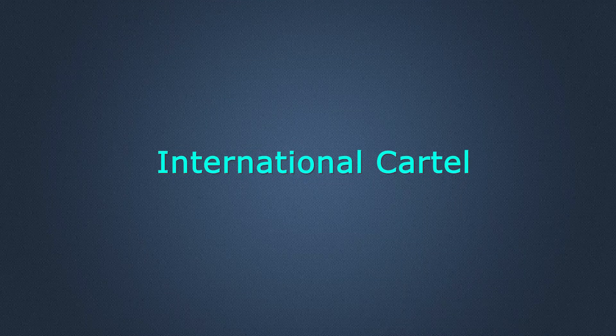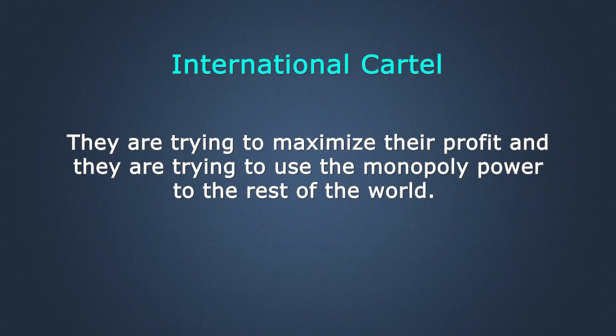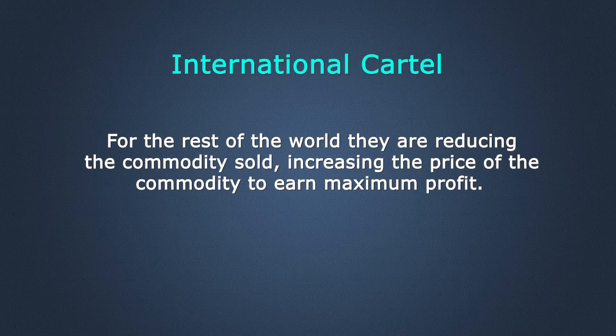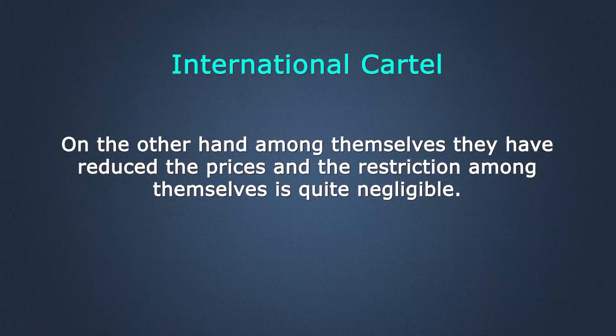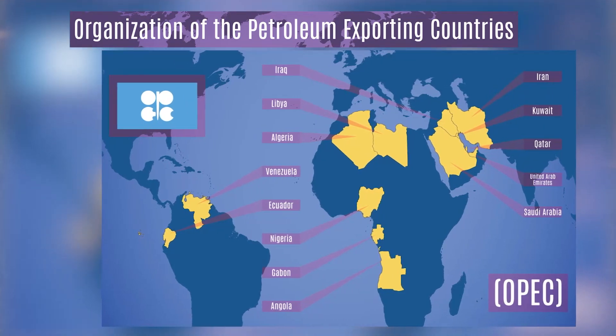Now we are going to another protection policy — the international cartel. Cartel means basically a group of economies whose objective is to maximize joint profit. They are trying to use their monopoly power on the rest of the world — reducing the quantity of commodity sold and increasing the price to earn maximum profit. Among themselves, they have reduced prices and restrictions are quite negligible. Nowadays cartels are restricted worldwide, but the most well-known cartel is OPEC — the group of petroleum exporting countries. They reduce their supply and increase prices to maximize their profit. OPEC is one ideal example of an international cartel.